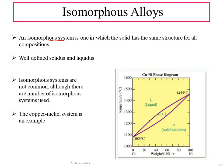For isomorphous alloys, there will be a well-defined solidus and liquidus line, as shown in the figure. If we take any point above the liquidus line, throughout it will be in a fully liquid state. Moving inside between the liquidus and solidus lines, we enter a two-phase region.